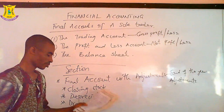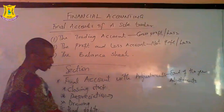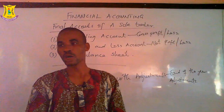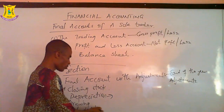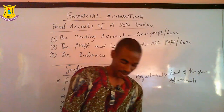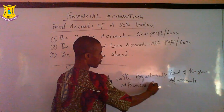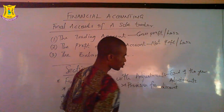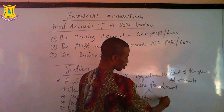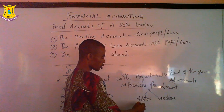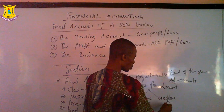We also have bad debts — those debtors who are eventually unable to pay us for one reason or another. Some we might recover, while others we cannot. Those we refer to as bad debts. Then we have provision for discount, which comes in two ways: provision for discount on debtors, in the form of discount allowed, and provision for discount on creditors, in the form of discount received.